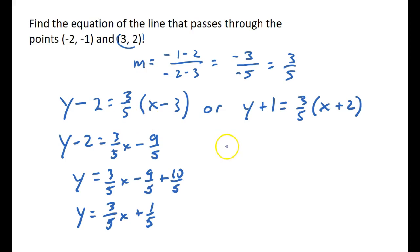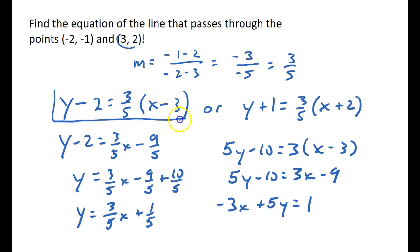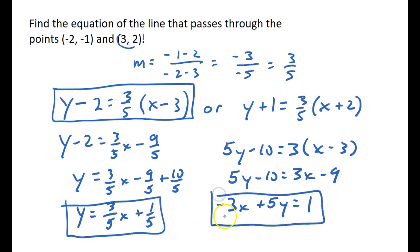Or I could convert this to standard form. So I could go 5y - 10 = 3(x - 3). 5y - 10 = 3x - 9, and get -3x + 5y, add 10, equals 1. So here's point-slope form, slope-intercept form, and standard form.